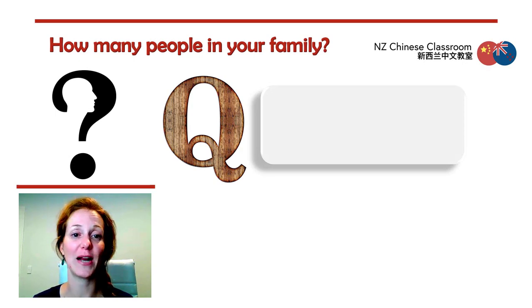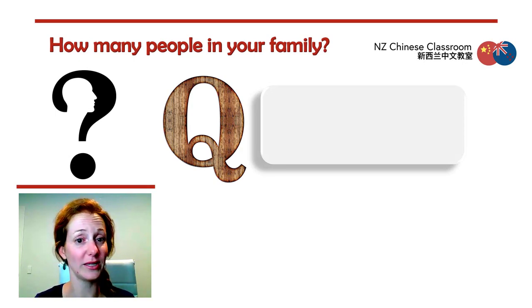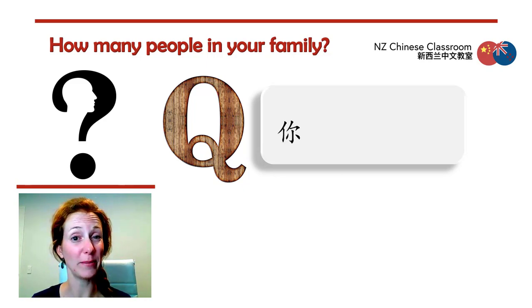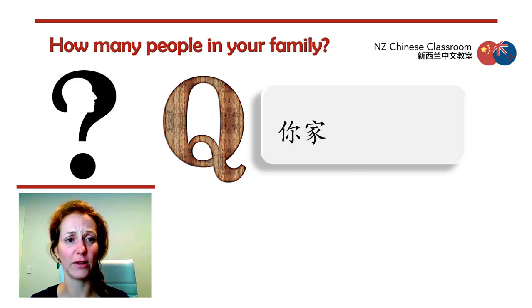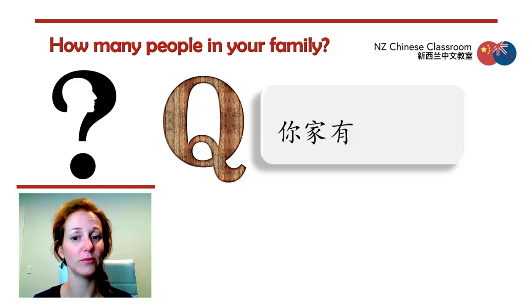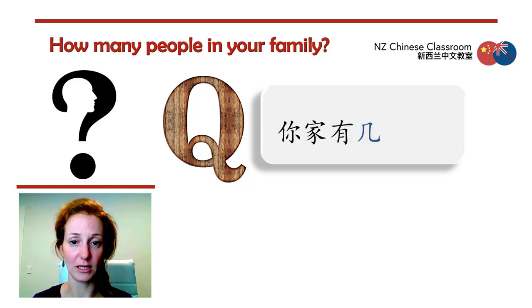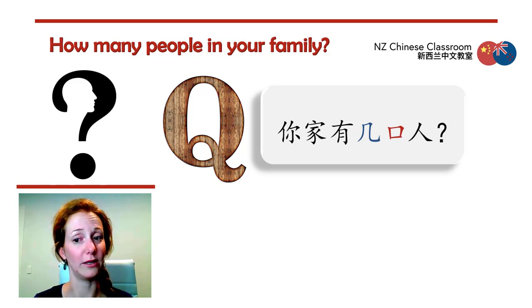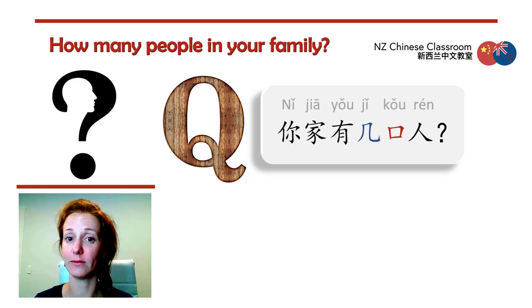So asking the question 'how many people in your family,' we're asking 'you,' so that's what we start with. 你。 The word for family? 家。 What about 'to have'? How many people do you have in your family? 有。 Have a look at these next few words: 几口人。 你家有几口人 means 'how many people in your family.'